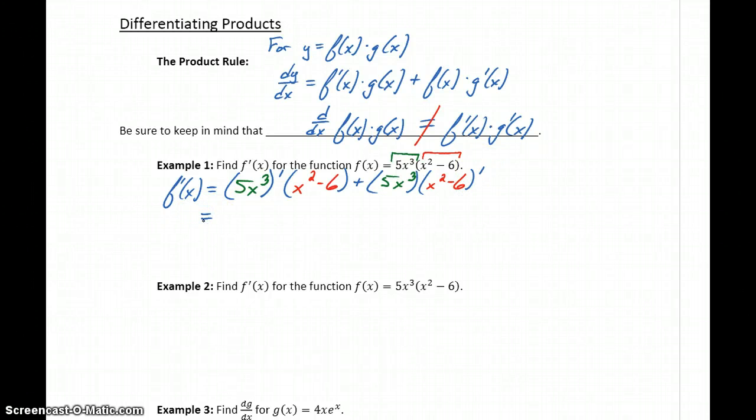So we always have to set up this expanded rule and then apply the differentiation. The derivative of 5x cubed will give us 15x squared times the x squared minus 6, which again doesn't change, plus the 5x cubed, which doesn't change, times the derivative of x squared minus 6, which will be 2x.